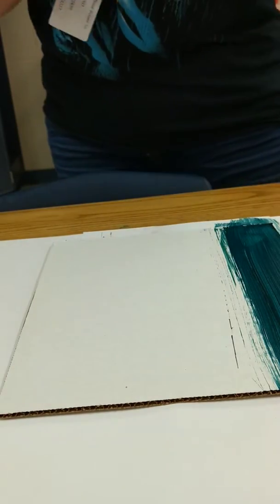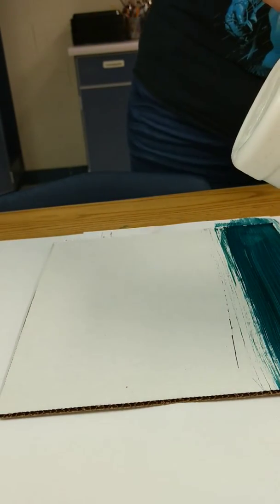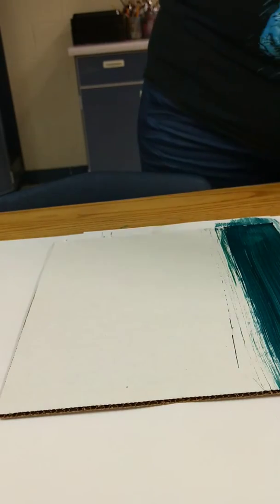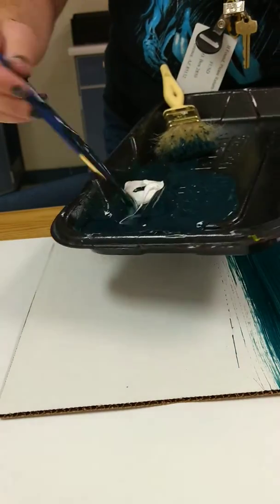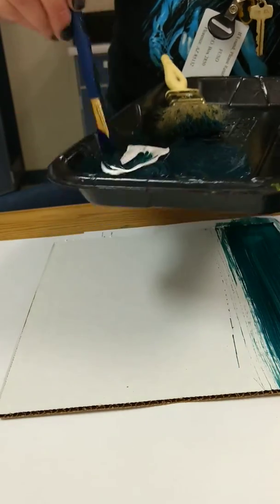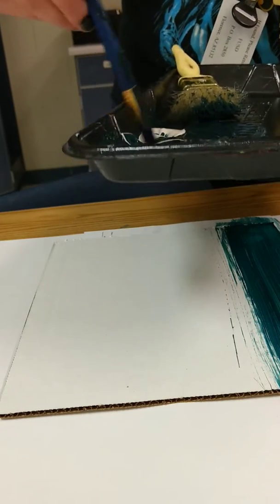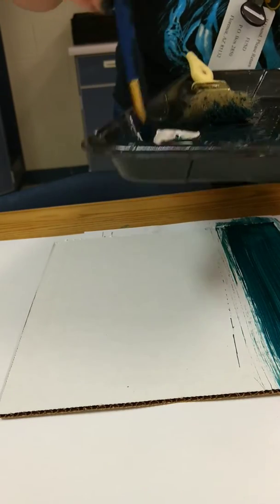Next, we are going to grab some white paint and add a little bit to our turquoise. We want to make the paint a little bit lighter each time and paint a new streak of our lighter color.